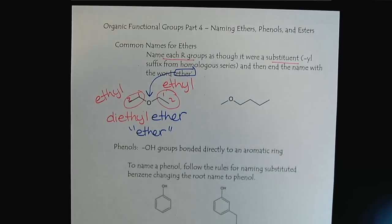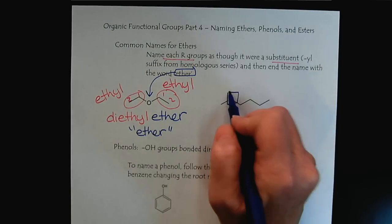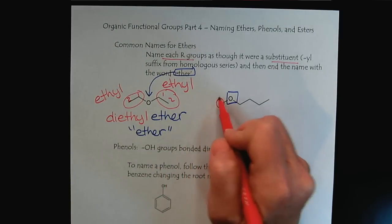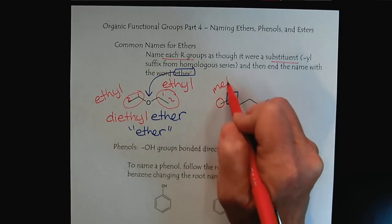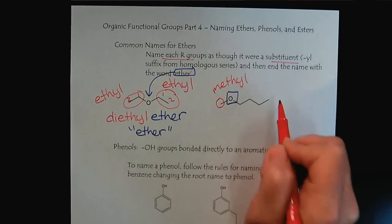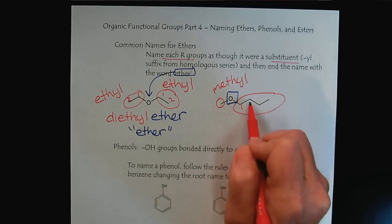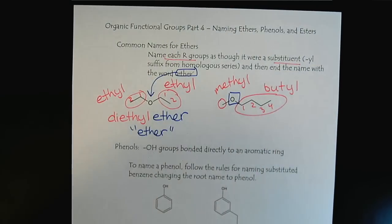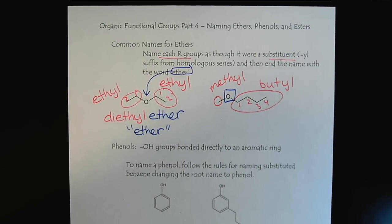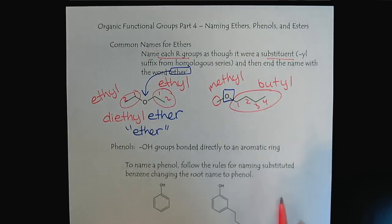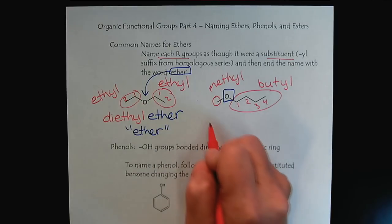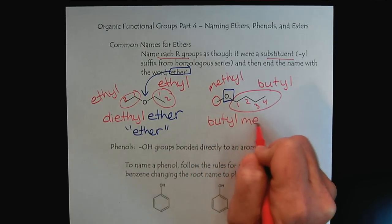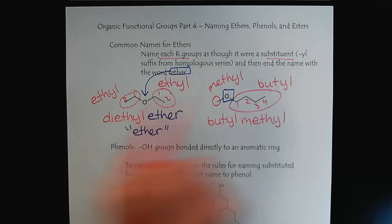Of course, so here's our ether again, the R groups don't have to match. So we could have a methyl on one side and then a one, two, three, four, a butyl on the other side. And so there's really no rules in common names but we'll follow the IUPAC convention, alphabetical. So we would call this butyl methyl ether.